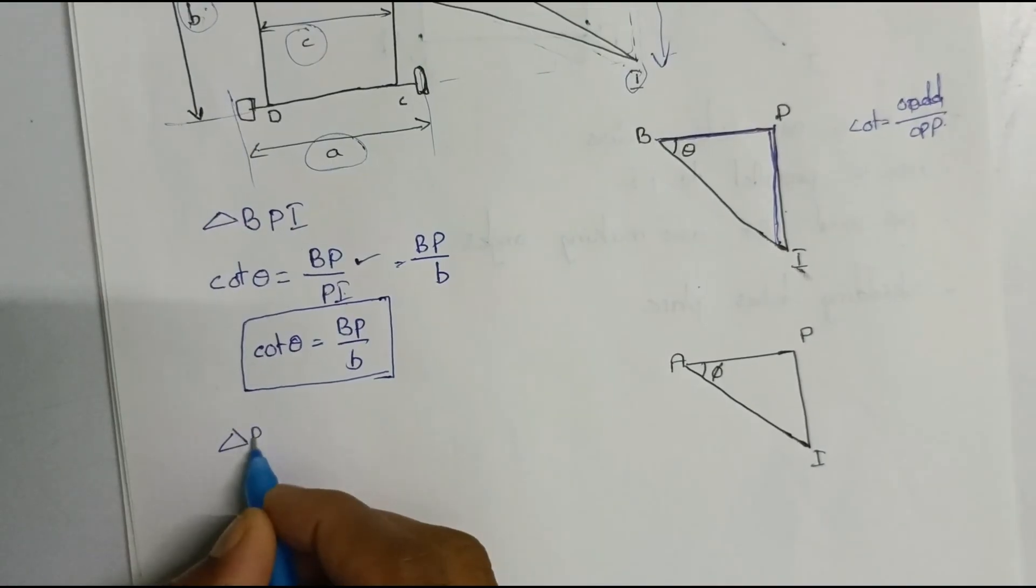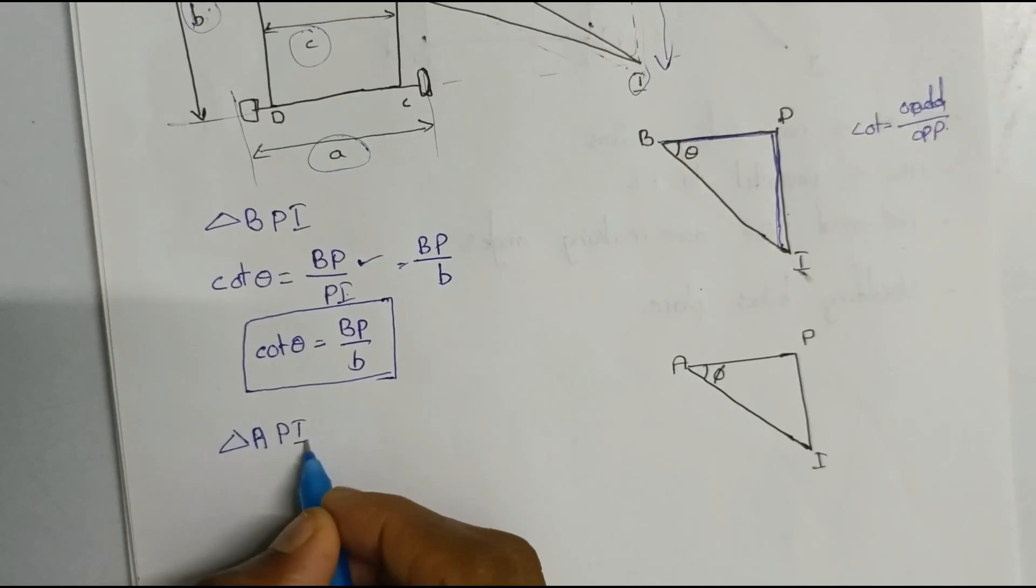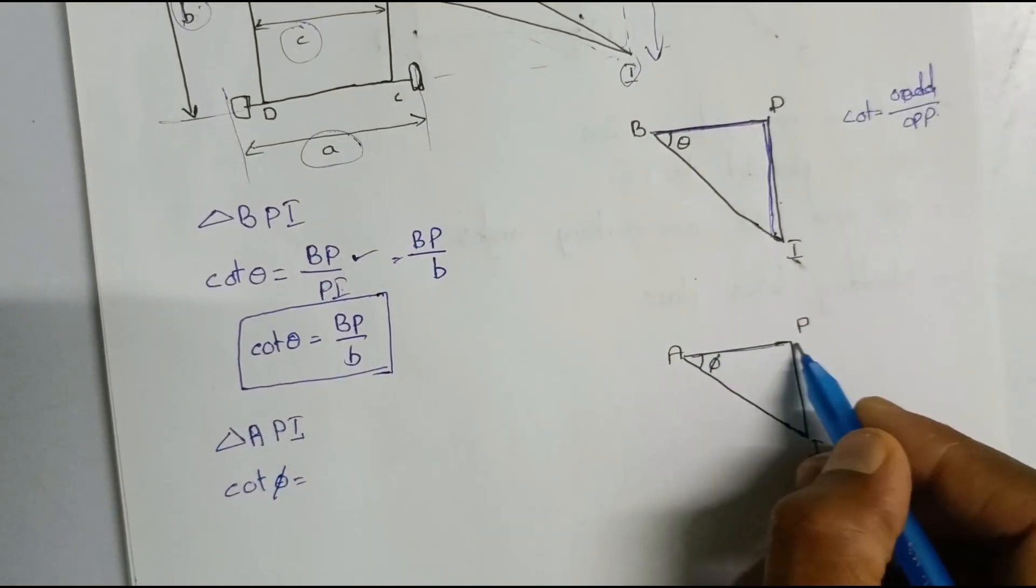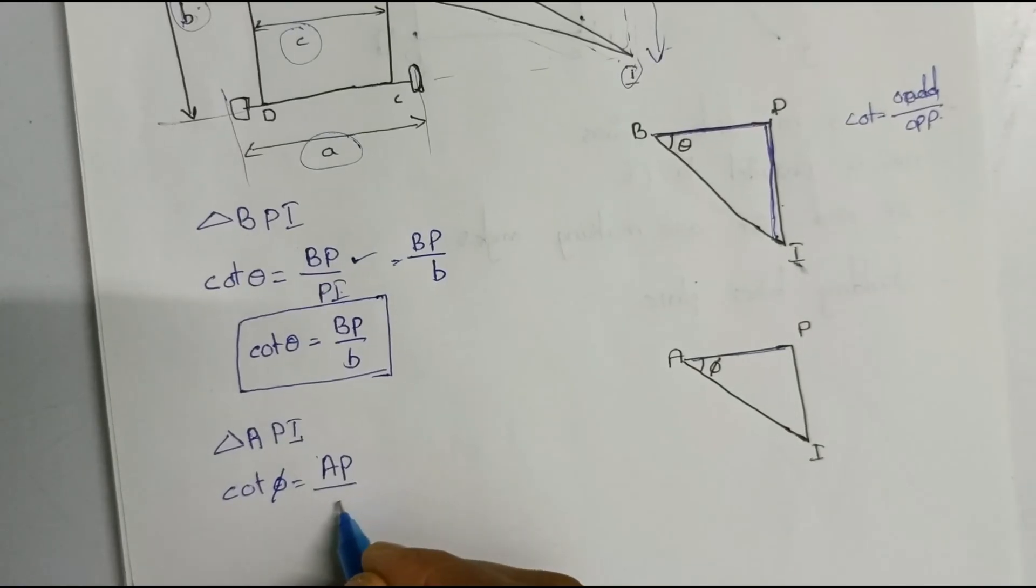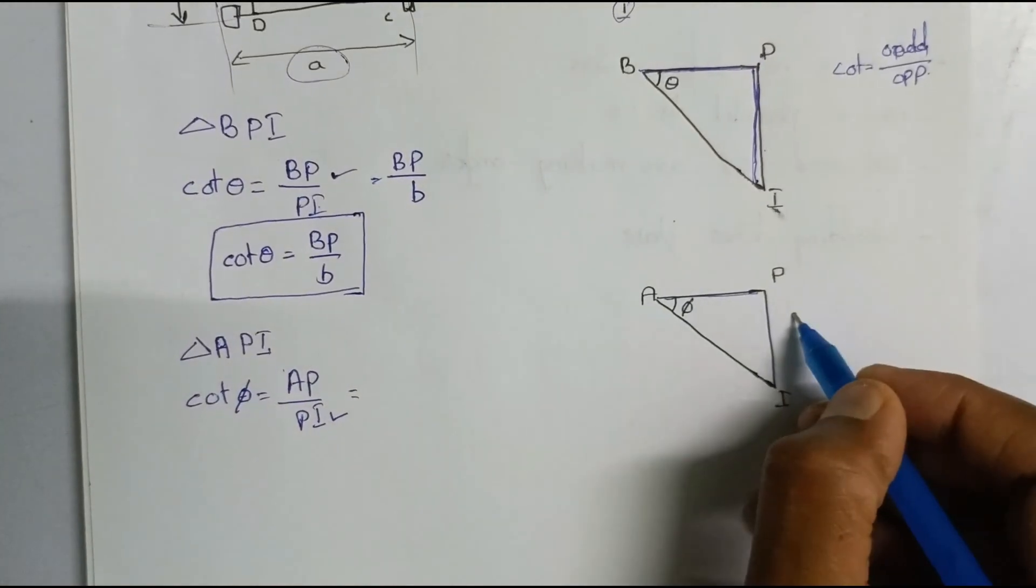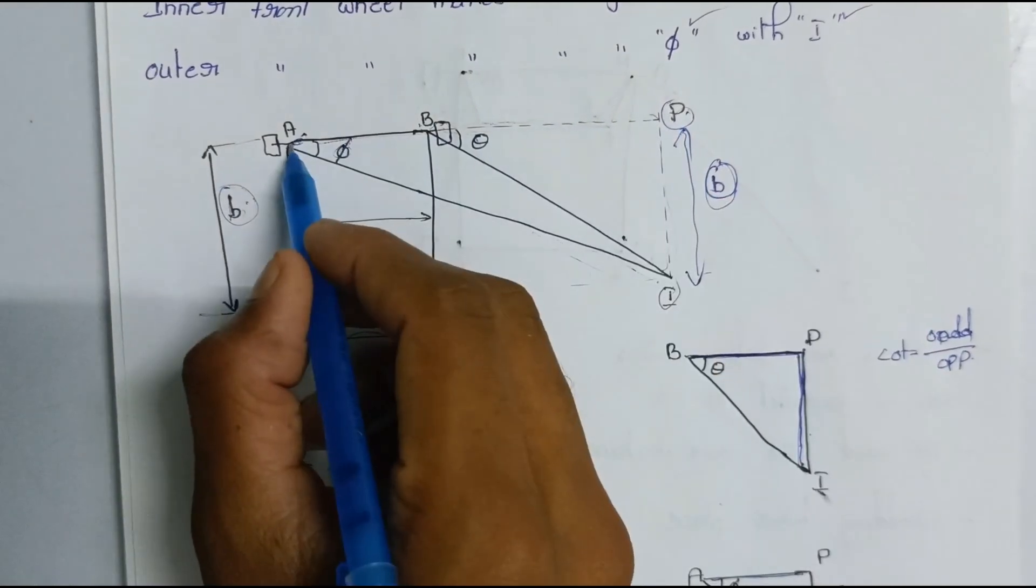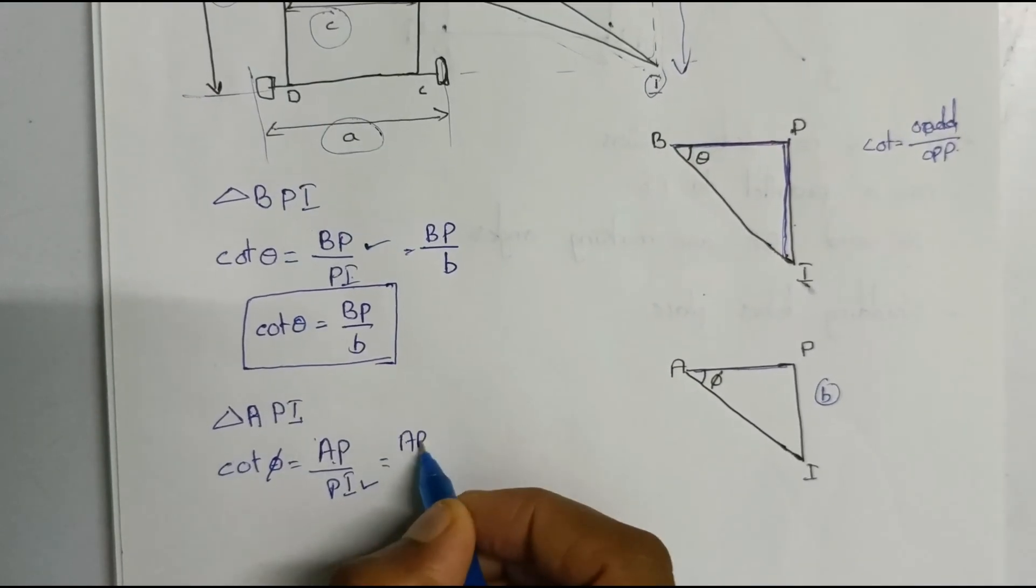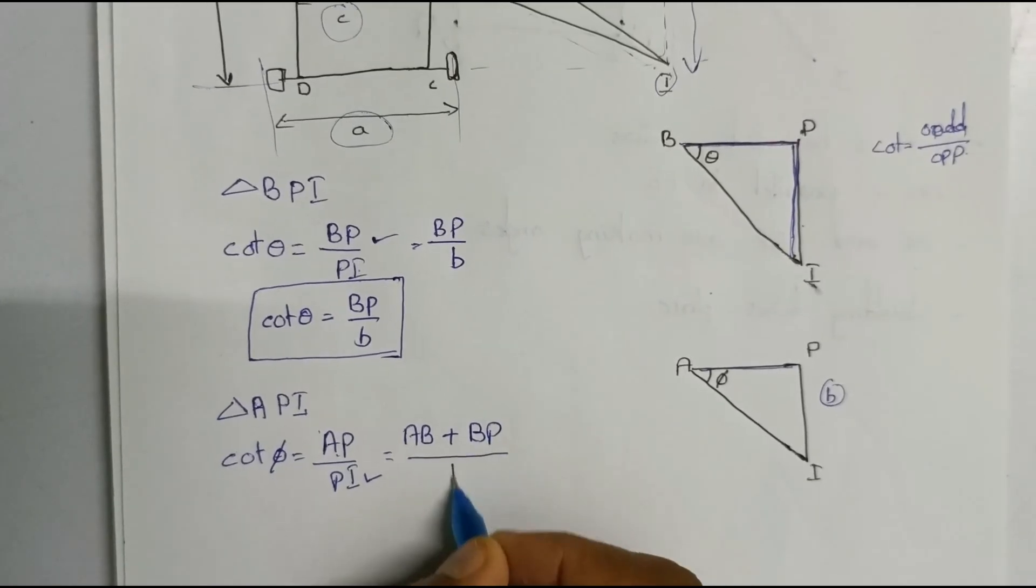From triangle A P I, cot phi is equal to adjacent side by opposite side. Adjacent side A P divided by P I. P I is going to replace B. A P is going to replace A B plus B P. A B plus B P divided by B.